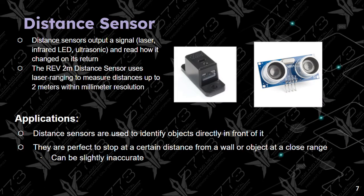The next few sensors have to do with distance. The first is the distance sensor, which can output signals such as laser, infrared LED, or ultrasonic, and read distance based on its output. The REV 2-meter distance sensor uses laser ranging to measure distances up to 2 meters with millimeter resolution. Its applications include identifying objects directly in front of it and stopping at a certain distance from a wall or object, though it could be slightly inaccurate.